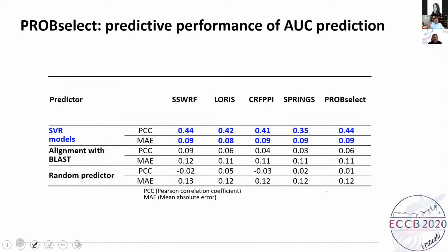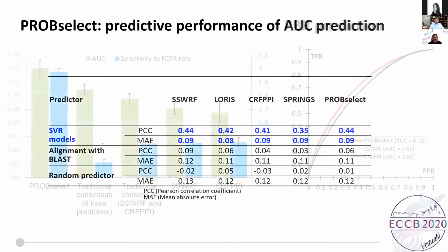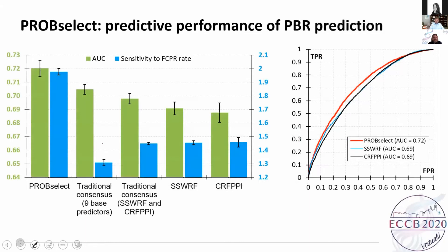The results show that we can reasonably well predict predictive performance. Correlations are in a range of about 0.4, which is reasonable, and error rates are modest. Comparing with the only alternative which is alignment, they are much better. The point here is to see whether these predictions of predictive performance could be used for their original purpose — to improve predictions of protein binding and to estimate predictive performance.